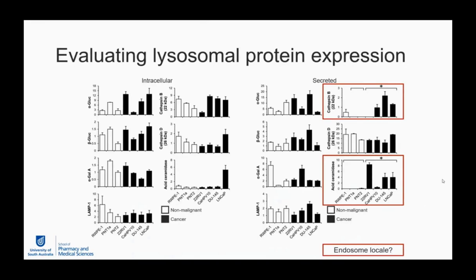We also measured intracellular protein expression and found wide variation, with nothing particularly striking. However, when we looked at the secretome, we found that cancer cell lines had upregulation of cathepsin B and acid ceramidase, which had previously been alluded to. Interestingly, the mature form of cathepsin B showed significant change, despite overall expression not being very different between cell lines. This suggests these proteins may be released from an endosomal location, as they mature at a slightly more basic pH than the lysosome.